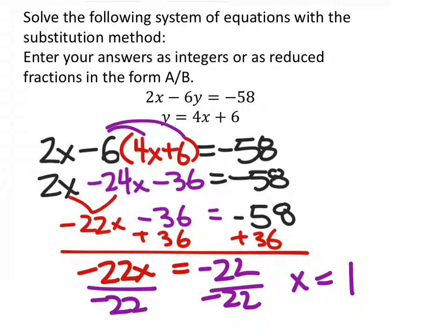So when we write the solution as a coordinate pair, we've found that x is 1. And at this point, it's very easy to go back to the second equation right here and replace the x with 1.